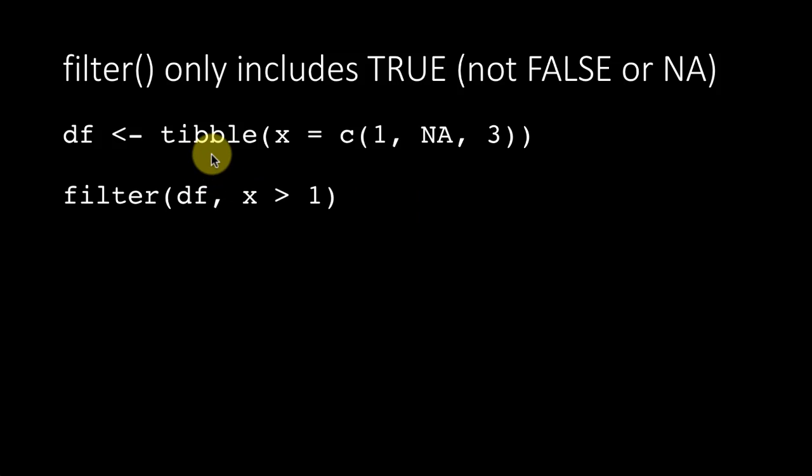For example, if I've got a table, it's just one column table, and if we say filter df, x greater than one, x is the only column. So x is greater than one only for this third row. For the first row it's FALSE, obviously it's filtered out. The second row, the result is NA.